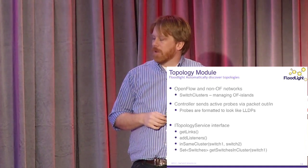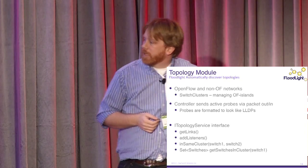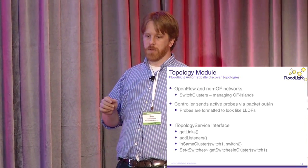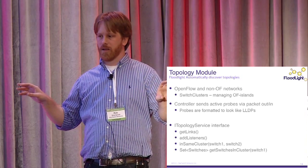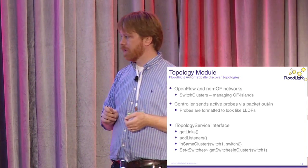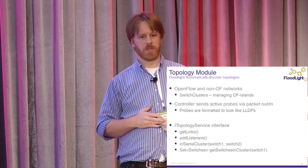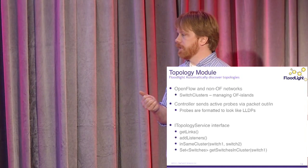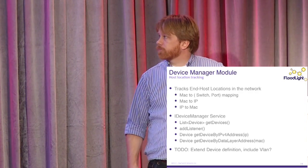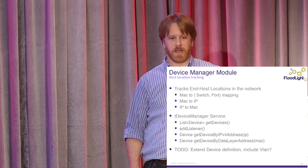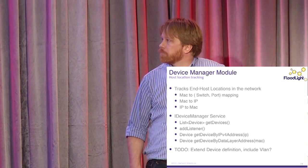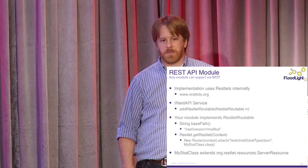We have a module that gives you all topology information. Notably, there's a concept of a switch cluster — if you have multiple OpenFlow islands that are disconnected with no OpenFlow path between them, you can still discover hosts between them if there's a broadcast domain or routers. There's a lot of work in getting the non-OpenFlow bits of the network to work with the OpenFlow bits. Device manager lists end hosts — MAC addresses discovered, where they attach to the network, and their network location.